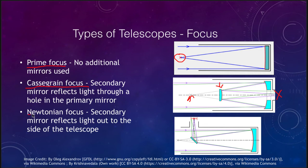The third type is a Newtonian focus, which also uses a secondary mirror, but instead of reflecting the light straight back, it's angled so the light comes off to the side. Which arrangement is more convenient depends on the type of viewing and the telescope design. A telescope would be designed generally with one or the other of these configurations.